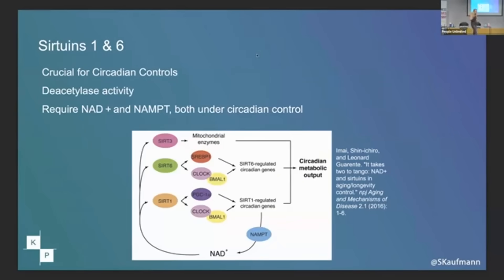So sirtuin 1 and 6 — what are they? We have 7 mammalian sirtuins. 1, 6, and 7 live in your nucleus. 2 flips around the cell; we don't really know what it does. 3, 4, and 5 live in the mitochondria. If you want energy, you have to upregulate number 3. But 1 and 6 are key for all of this.